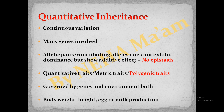There would be no epistasis as such. These types of traits are also known as metric traits, quantitative traits, and polygenic traits. Since many genes are involved, it is also known as polygenic inheritance. Quantitative inheritance is governed by both the genetic constitution of the organism and the environment. For example, body weight, height, and egg or milk production — all these traits show quantitative inheritance.